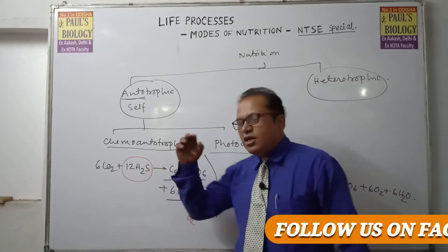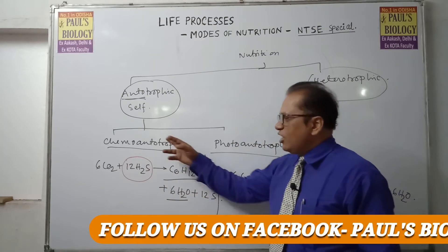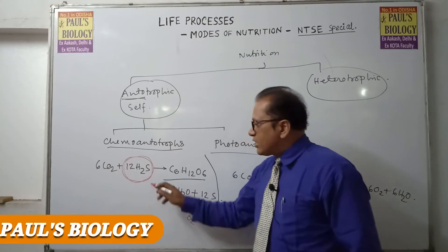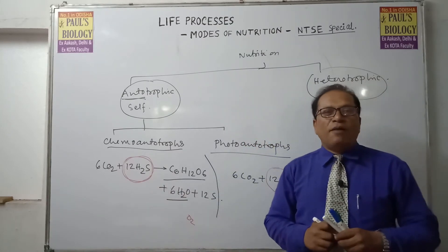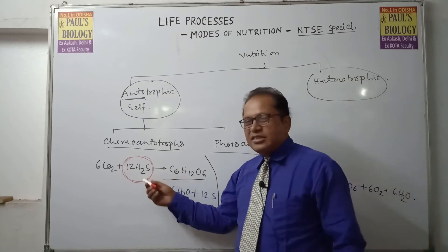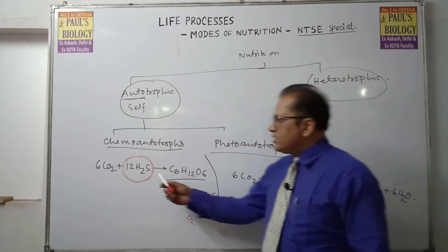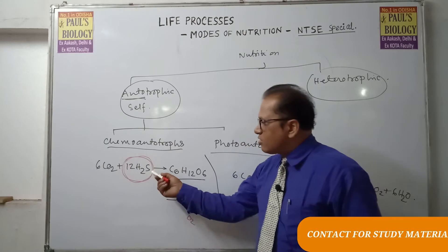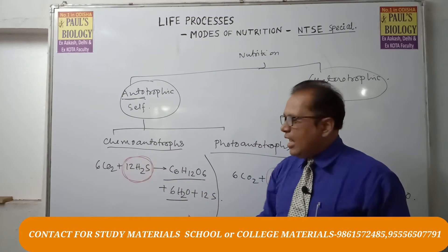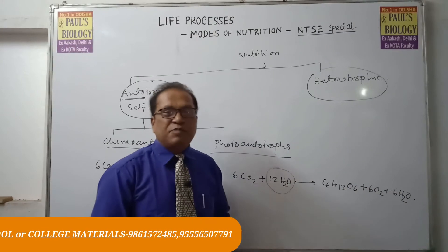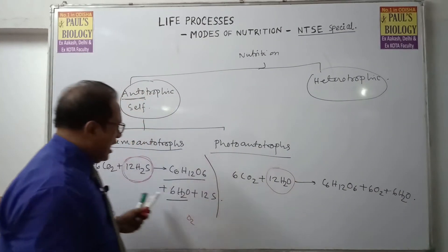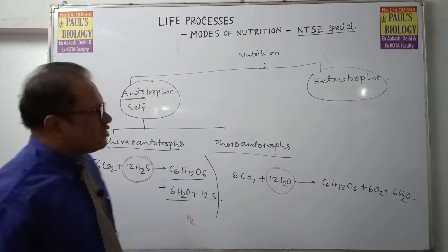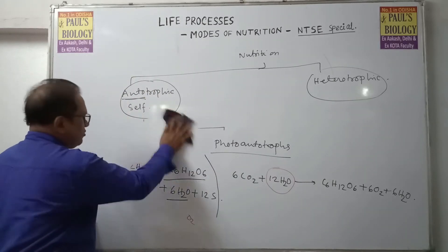Why is it called chemo-autotrophs? Because glucose is formed — so it is autotrophic — and a chemical is used instead of water. Hydrogen sulfide is used as a raw material, and because a chemical is used, this process is called chemo-synthesis. This is anoxygenic photosynthesis. That covers autotrophs.